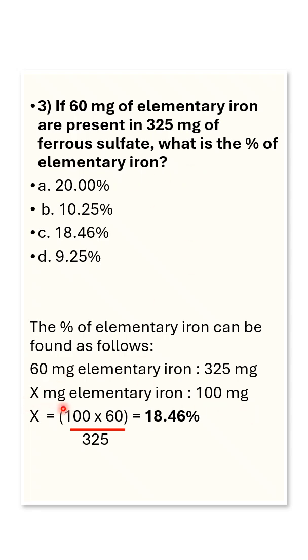Take it as X. Then find the value of X by cross multiplying: X = (100 × 60) divided by 325, which equals 18.46%. The correct answer is option C.